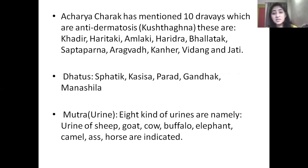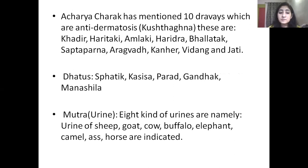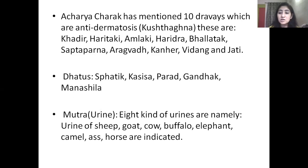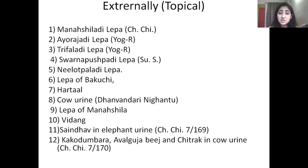Acharya Charak has mentioned 10 Dravyas which are considered as Kushthaghna: Khadir, Haritaki, Amalaki, Haridra, Bhallatak, Saptaparna, Aragwat, Kaneer, Vidang and Jati. The tools which can be used are Sphatika, Kasi, Parada, Gandhak and Manashila. Mutras are of eight kinds described in Ayurvedic classics, namely the urine of sheep, goat, cow, buffalo, elephant, camel and horse, which are indicated in Kushtha Roga Chikitsa. For external or topical application, Manashiladi Lepa, Ayurajadi Lepa, Rukhladi Lepa, Khandakushpa Lepa, Meelodpana Lepa — many kinds of Lepa are available which can be applied.